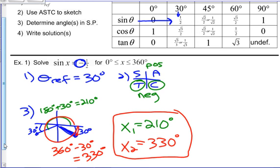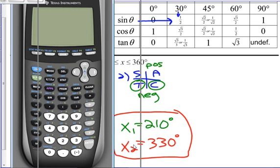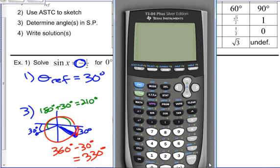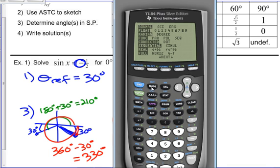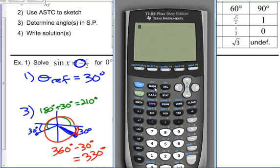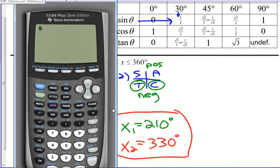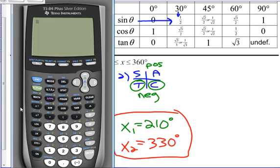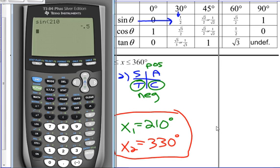I'll pull up my favorite graphing calculator here and I need to make sure that I'm going to be in degree mode. Let's see, we said that one of the answers was 210 degrees. Let's see what the sine of 210 is. Sine 210. Oh my gosh, it's negative 0.5, which is what it said in the original equation.